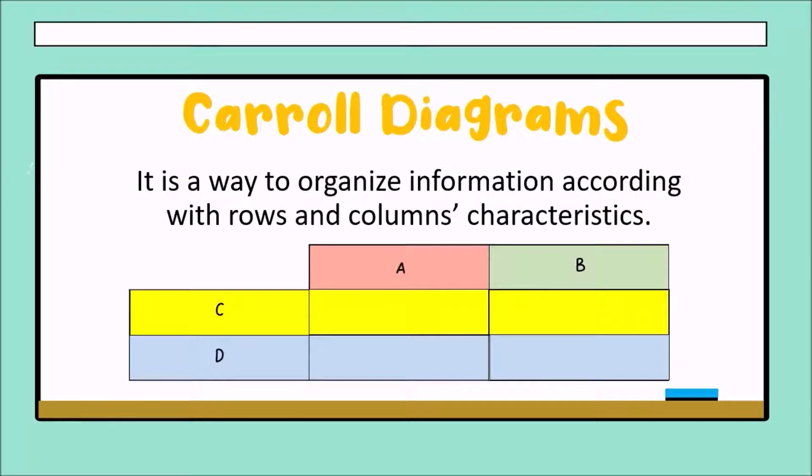Now, we have to compare information between C and A. We have to put that information here in C and A, in the intersection between C and A. Between C and B, we have to put the information here.